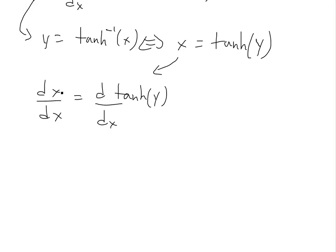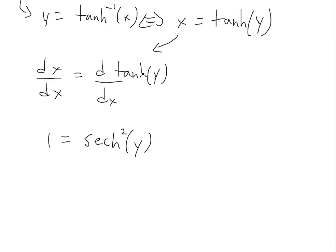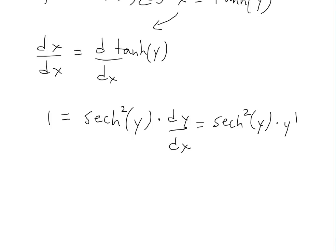On the left side, the derivative of x is just 1. On the right side, we have to use the chain rule, and we need to know the derivative of hyperbolic tan of y, which equals hyperbolic secant squared of y — as shown in an earlier video linked below. Applying the chain rule, we multiply by dy/dx, giving us: 1 equals hyperbolic secant squared of y times y prime.